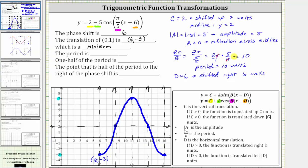Next, the period is 10 units, and one half of the period is five units. The point that is half of the period to the right of the phase shift would be five units to the right of the first point — that is when the x-coordinate is 11, which is this high point. The ordered pair for this point is (11, 7), which is a high point and therefore we classify this as a maximum. We are only asked to give the point as an ordered pair: 11 comma seven.